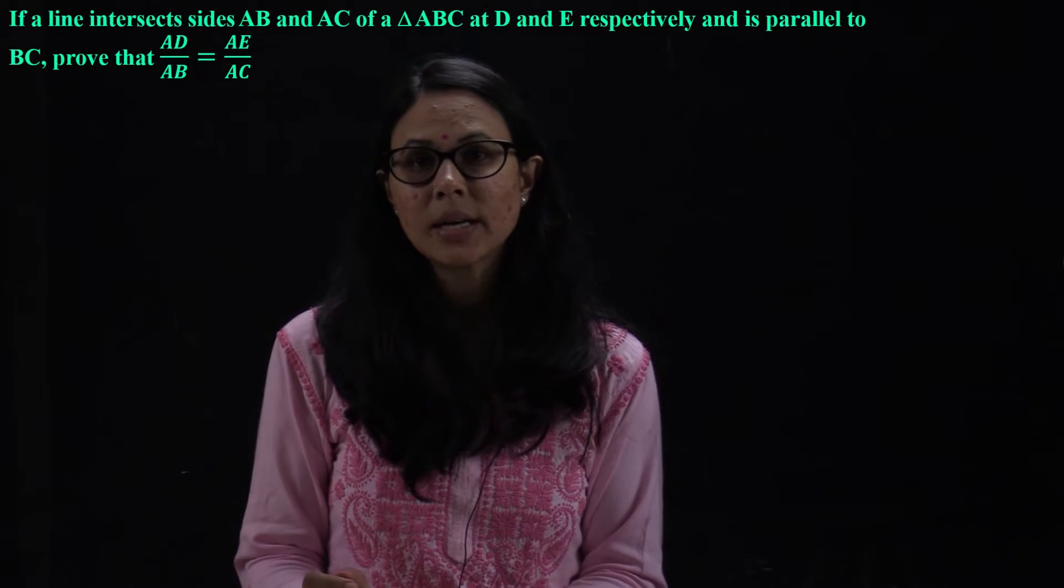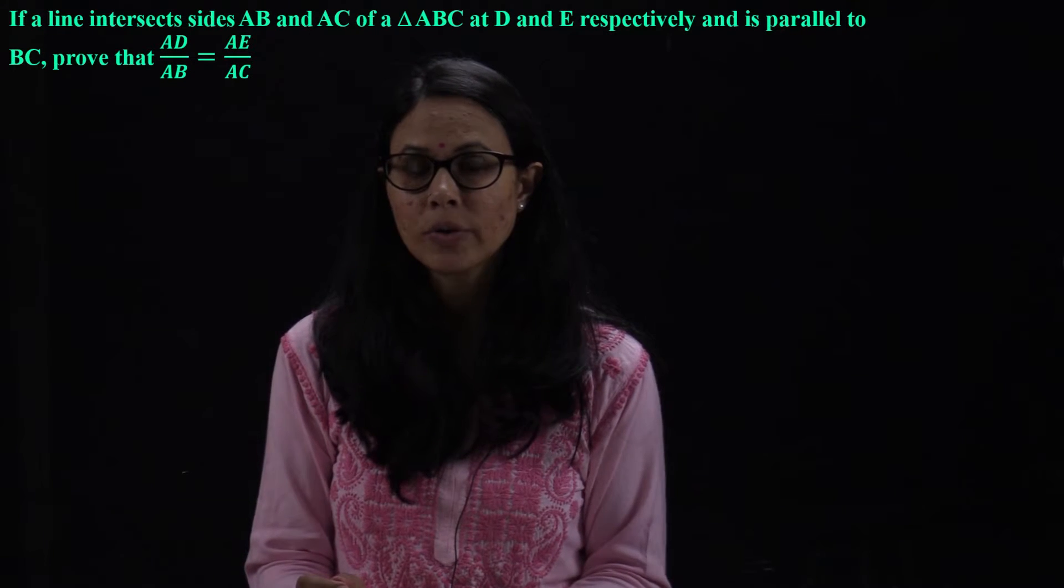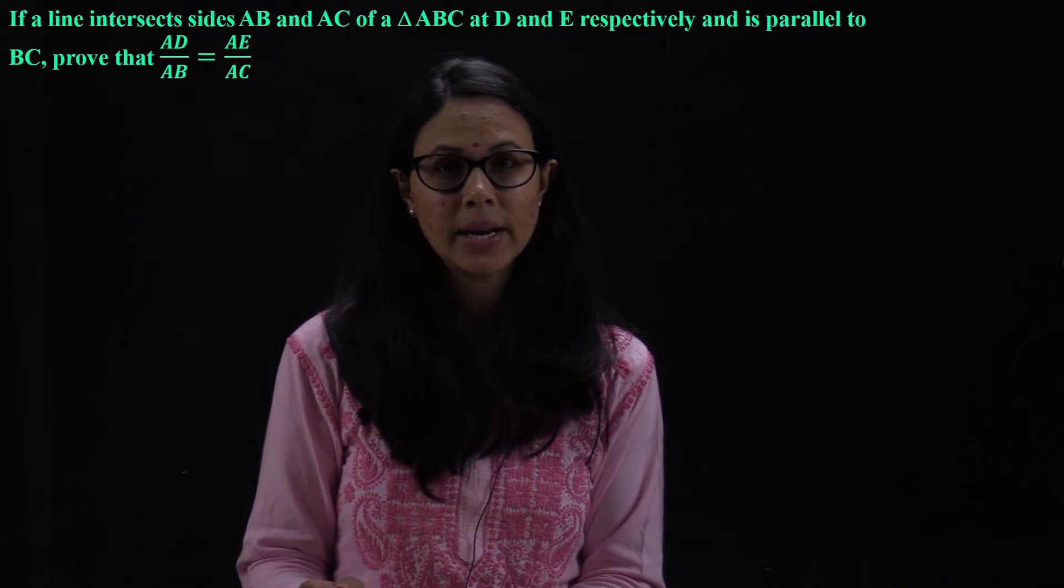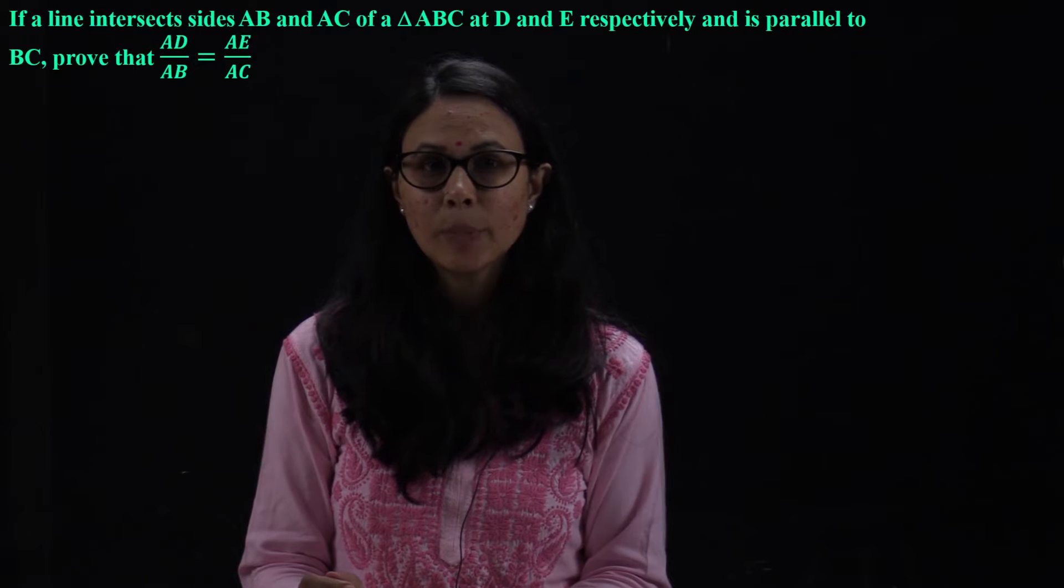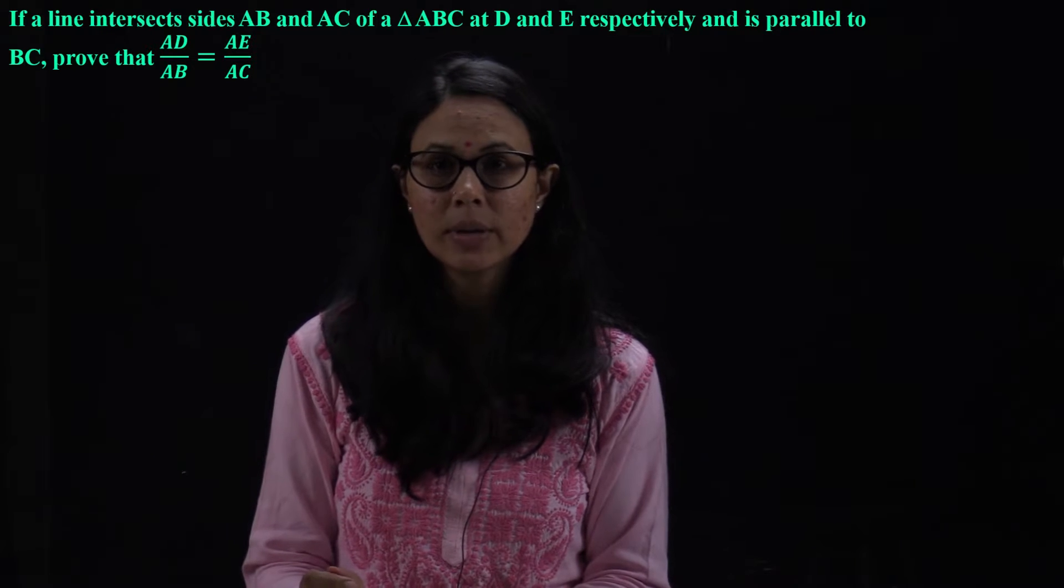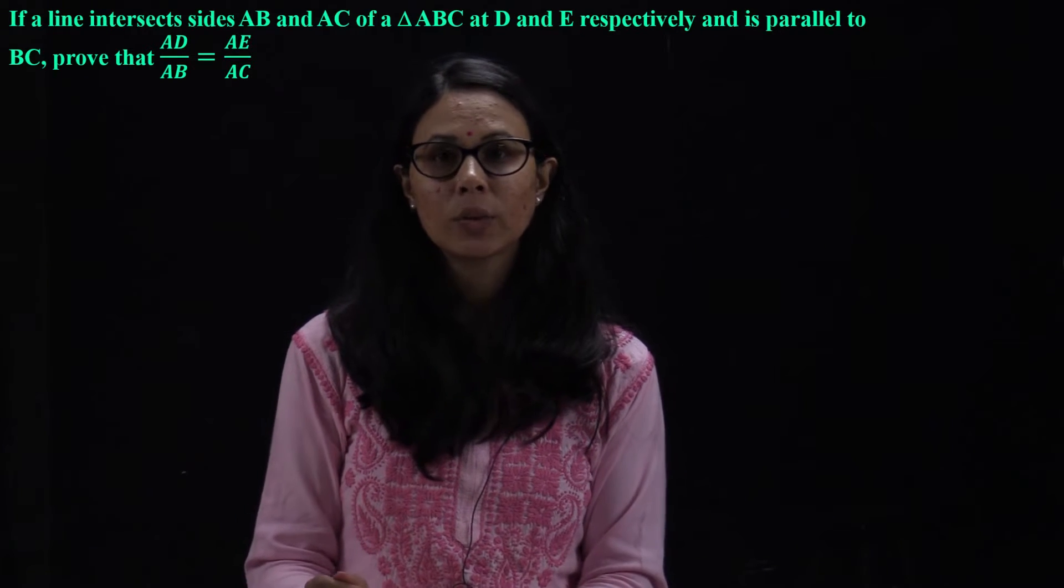If a line intersects sides AB and AC of a triangle ABC at D and E respectively and is parallel to BC, prove that AD upon AB is equal to AE upon AC. Here, what question is given?